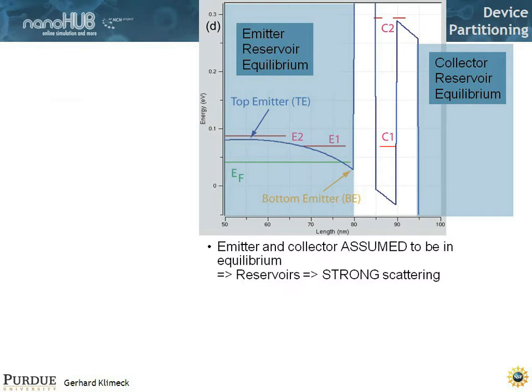From a computational sense, that is nice. Because you can do just equilibrium Green functions. Because there's no current, it's all in equilibrium. It makes the computation a little bit easier. And it also implies that you can do whatever you want to do in terms of scattering. So you do the easy thing. You assume infinitely strong scattering, meaning equilibrium.